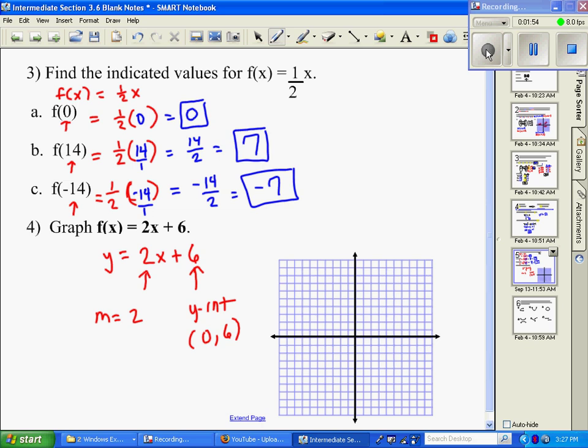And from this, we remember that 2 is our slope, and our y-intercept is the ordered pair 0, 6. That's from previous information. And now if I take this 2, my slope, and write it as a fraction, I simply do rise over run.